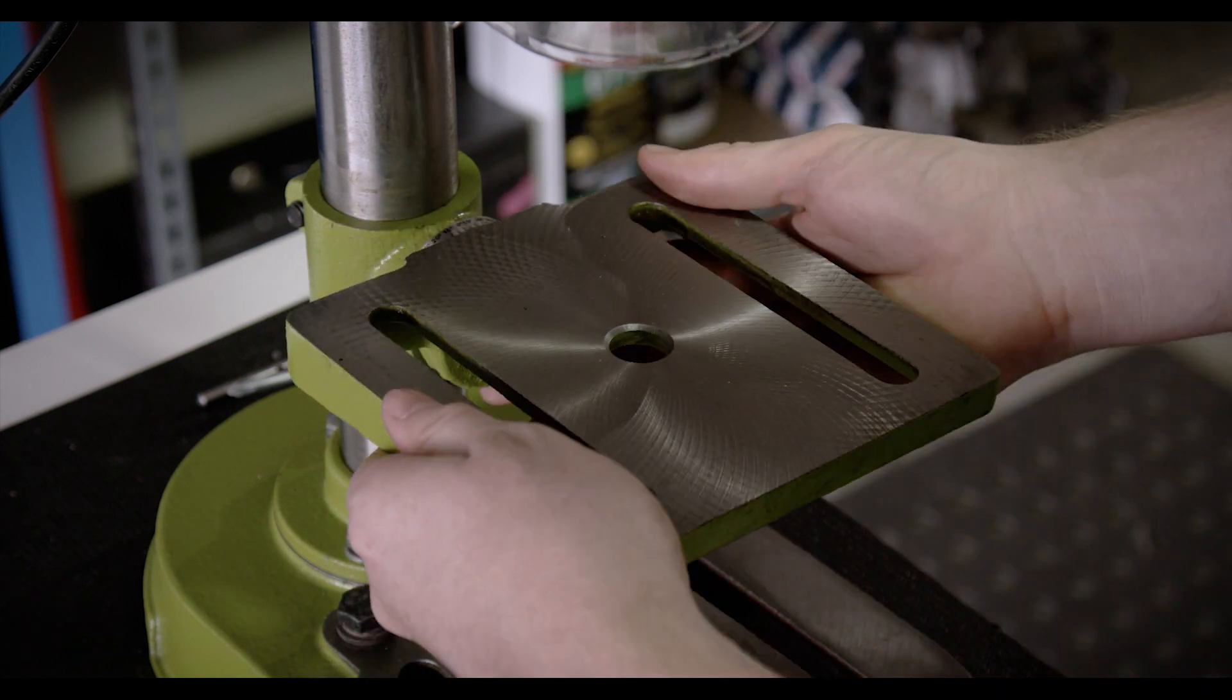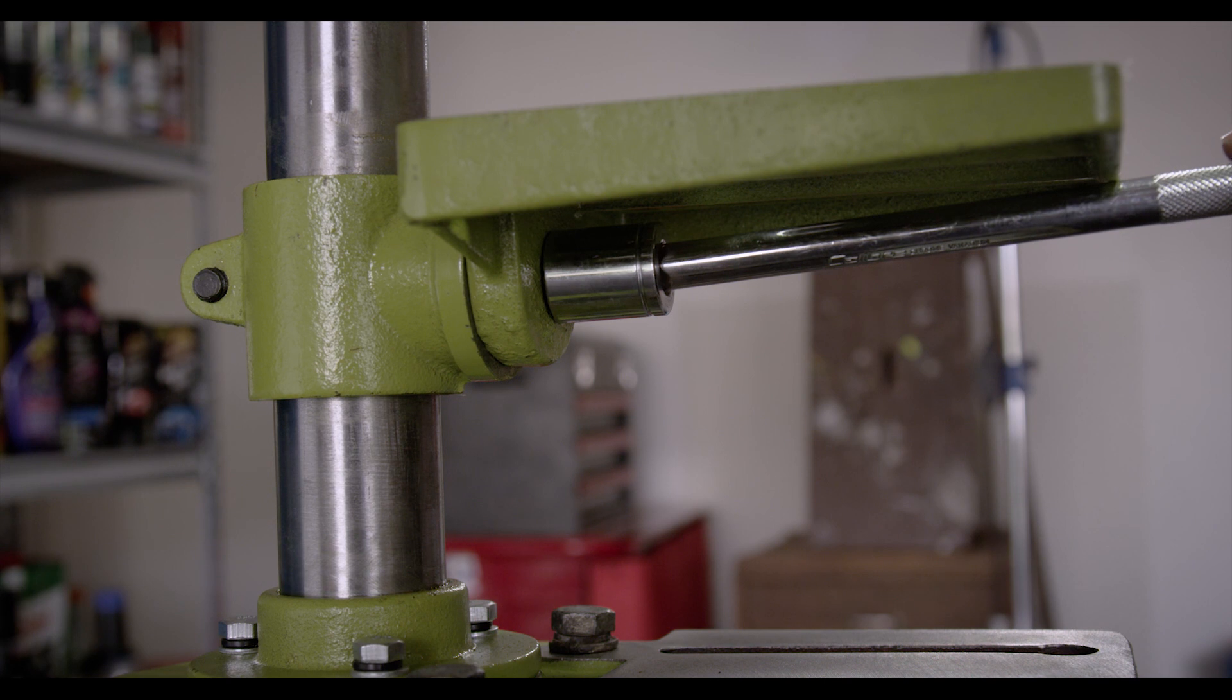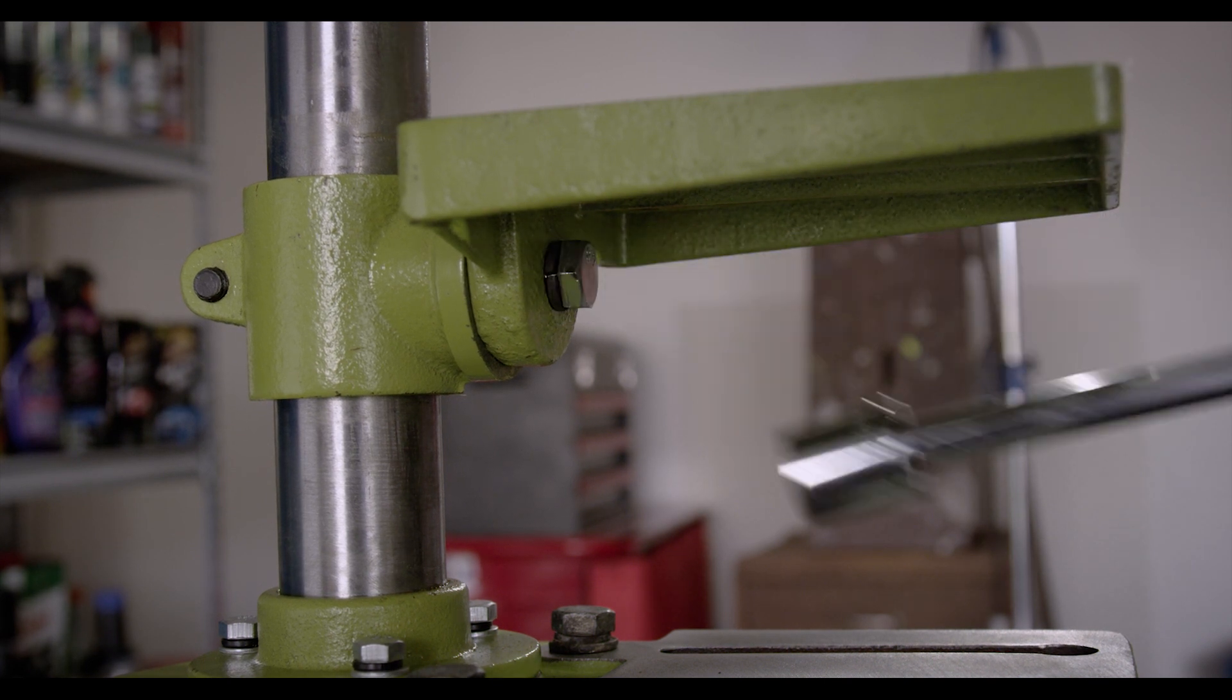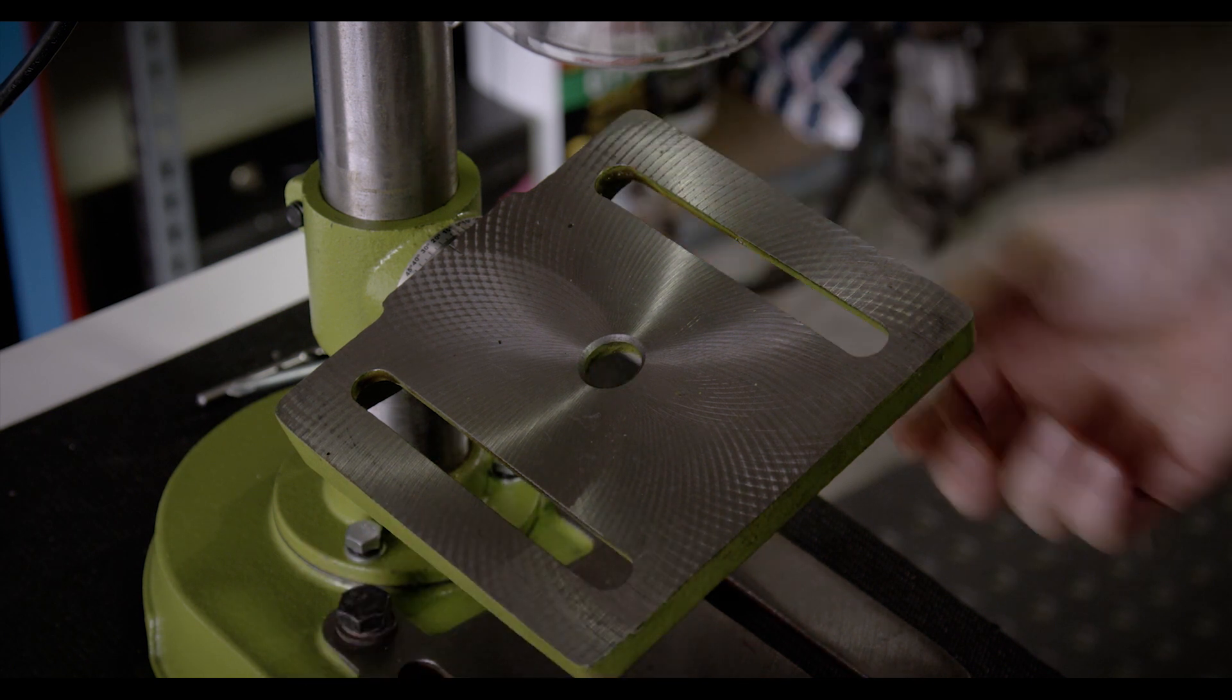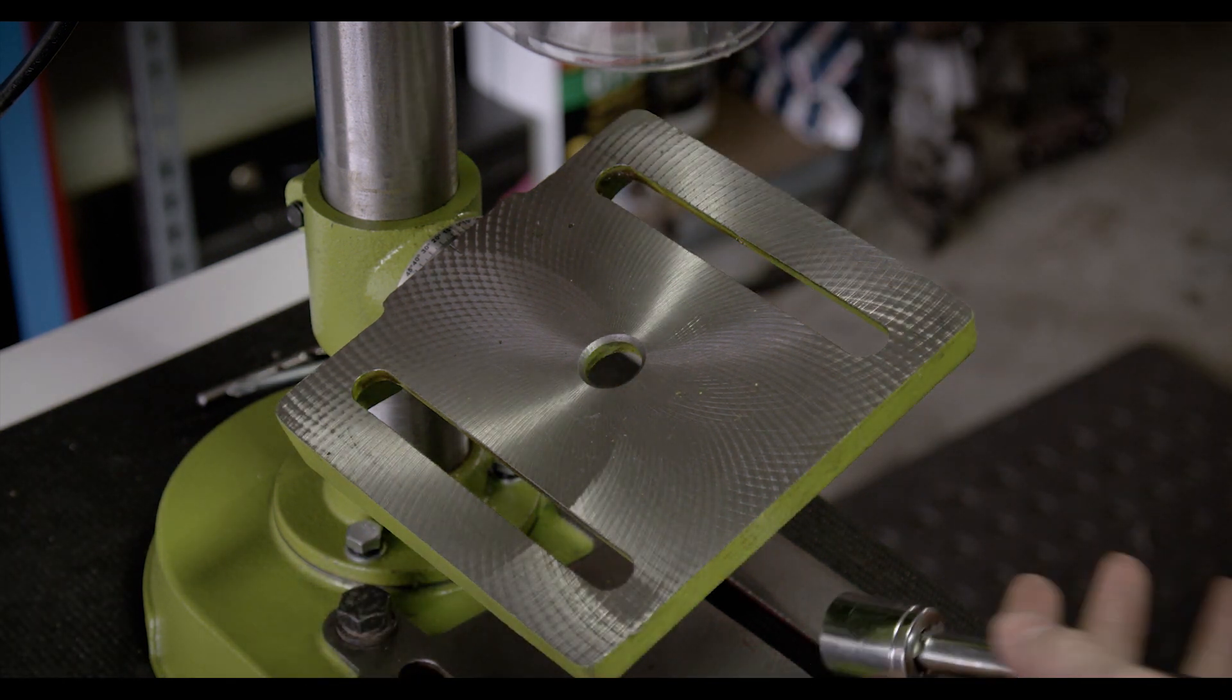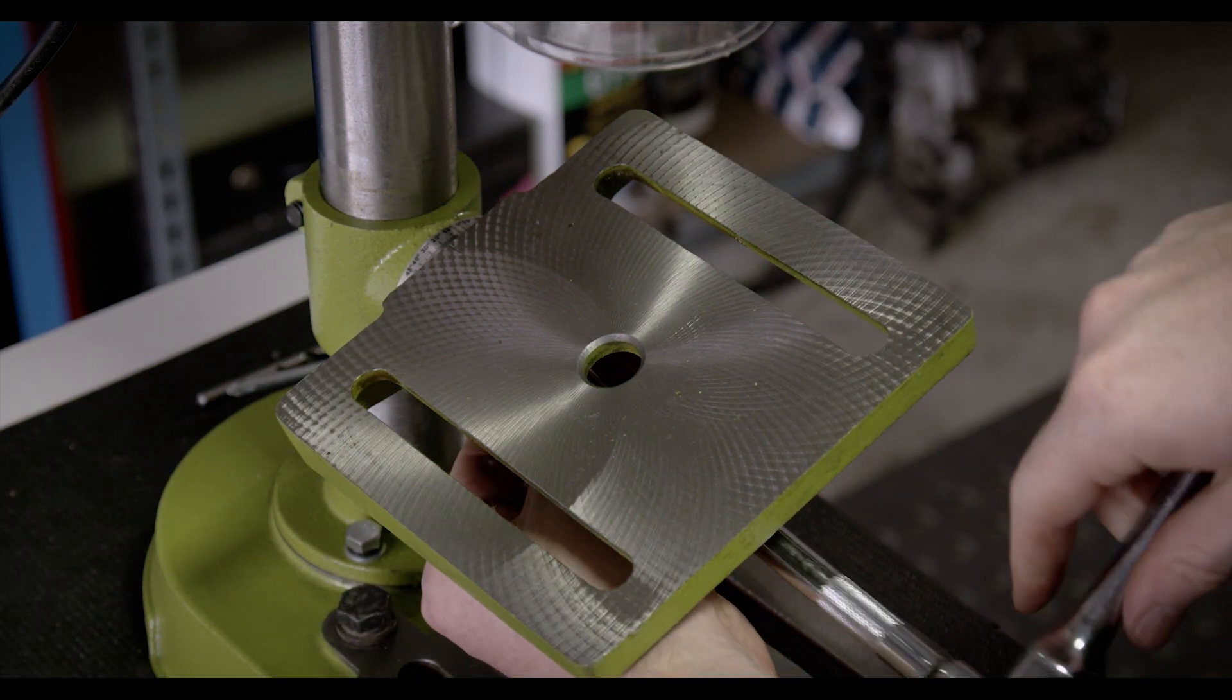Setting the worktable angle is done by loosening the securing bolt underneath and rotating the table to the desired angle, before tightening the securing bolt once again.